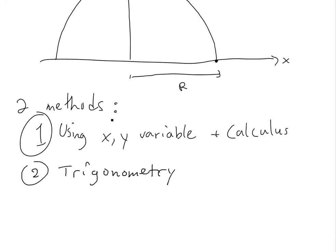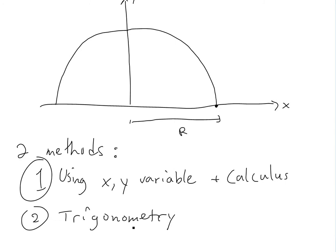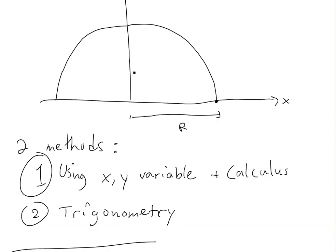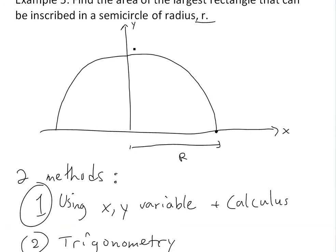The first method uses calculus with x and y variables, and the second uses trigonometry. Going back to the graph with the semicircle, let's put a random rectangle inside. This is symmetric — this length is x, and this length between the two sides is also x.